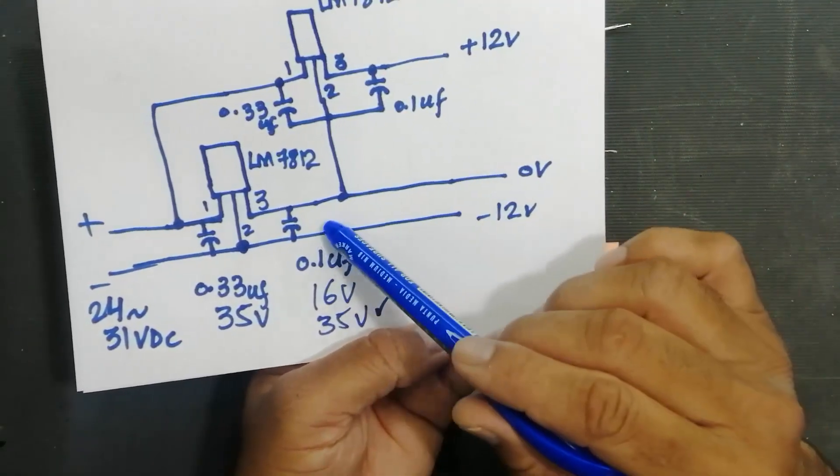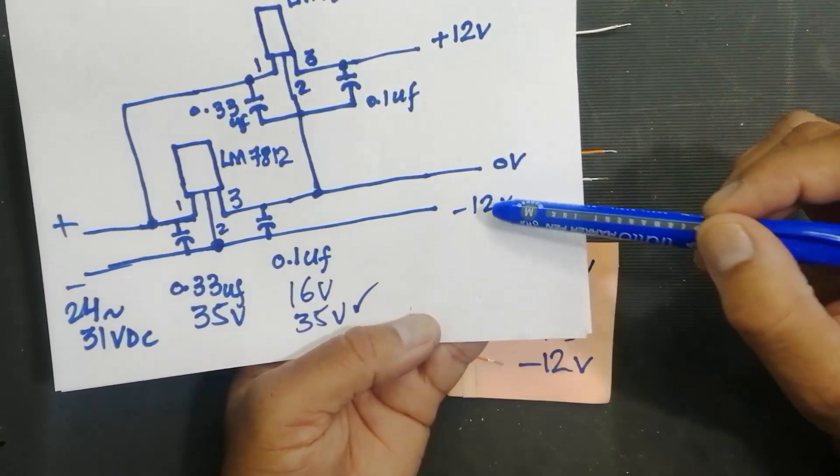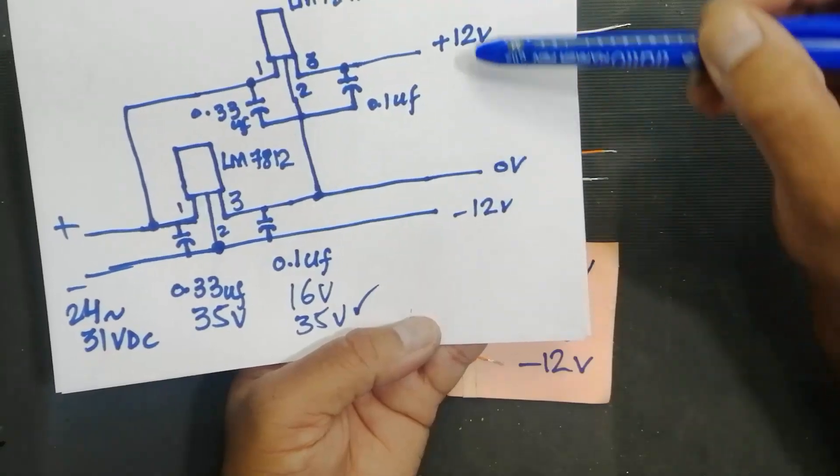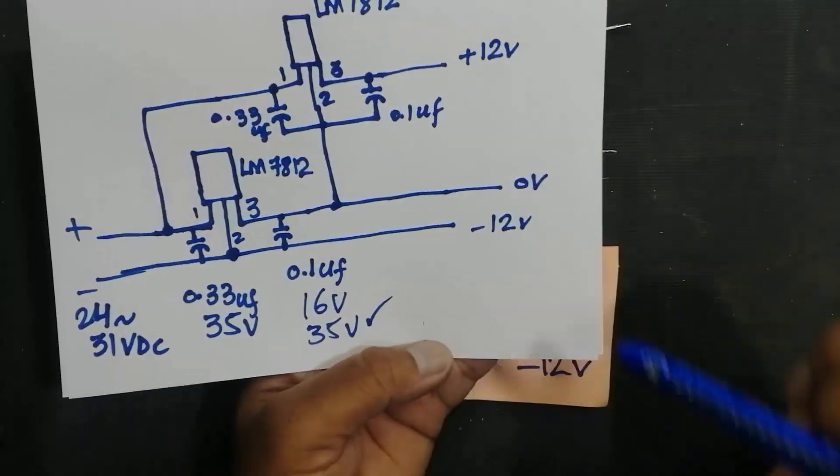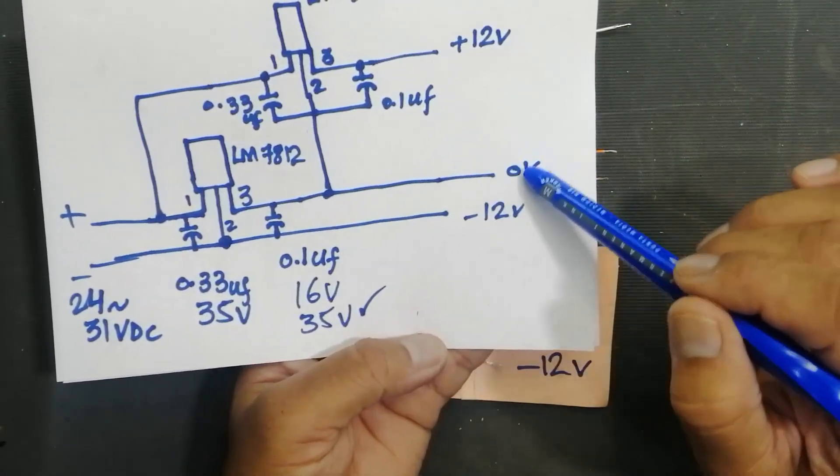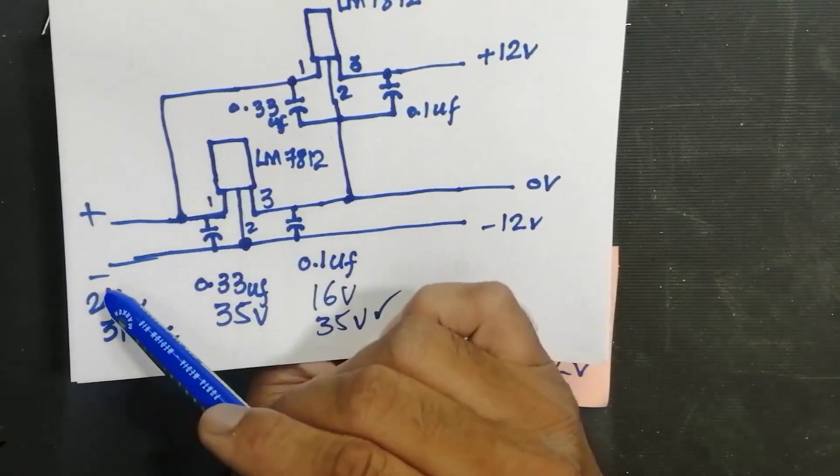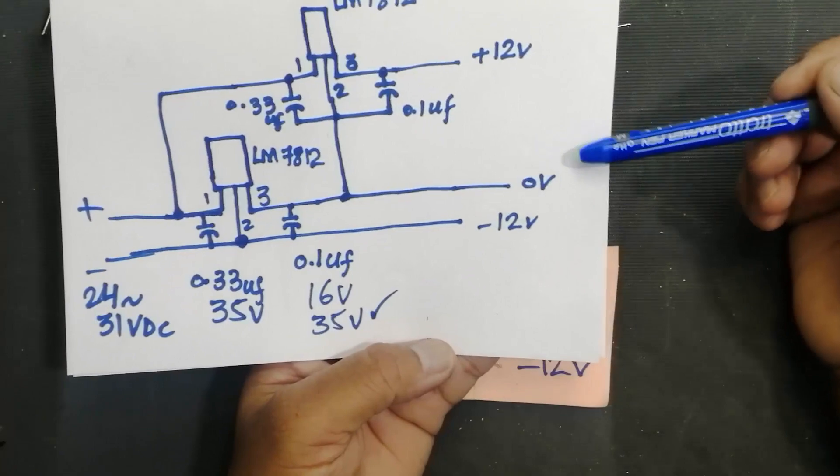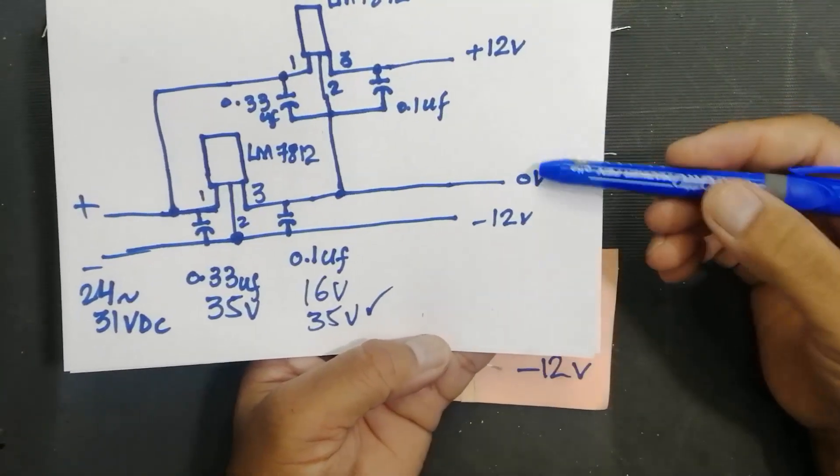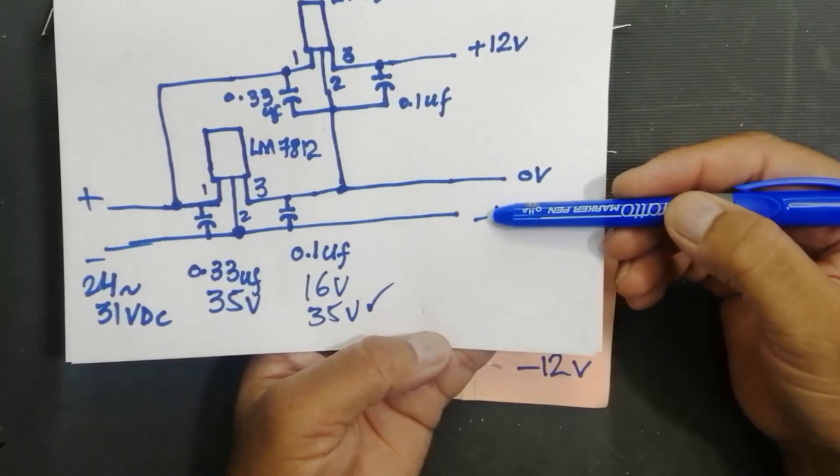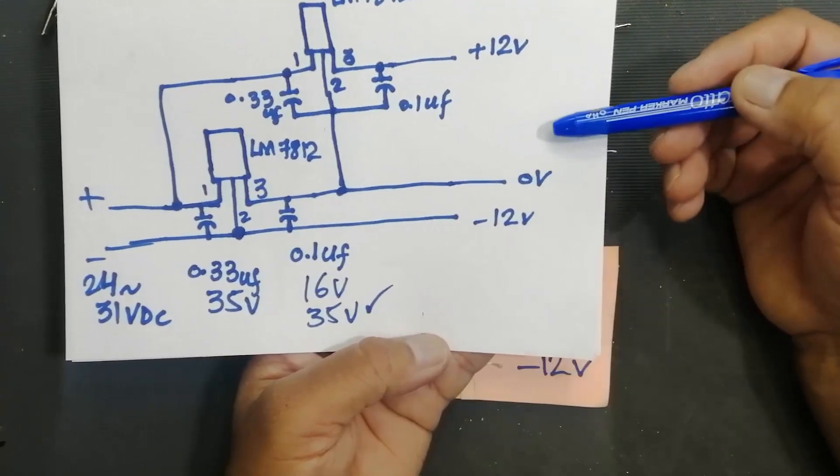If we use 7805 and we use this line as ground, we will take from this point with reference to this point 5 volt, 10 volt. But in this case we are using 7812. If we use this virtual ground, the actual from the input power supply this is positive, this is negative. If we select this line as a virtual ground, that time we will take this line negative and this line positive because we shifted the ground.